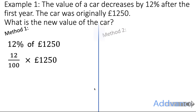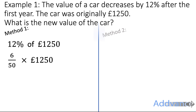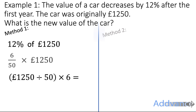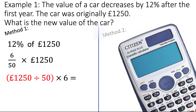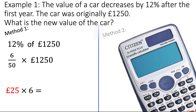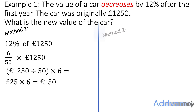12 out of 100 can be simplified as a fraction to 6 out of 50. So we can do 1250 divided by 50 and then times by 6. When working out a fraction of an amount, we divide by the bottom and times by the top. 1250 ÷ 50 = 25, and 25 × 6 = 150. So 12% is £150.